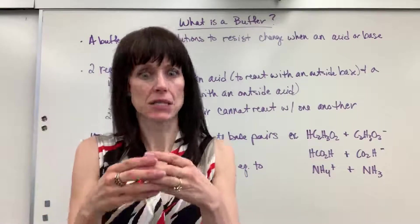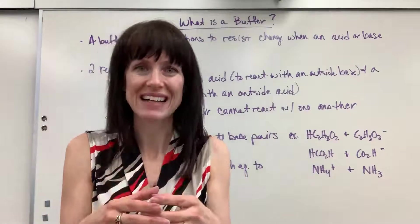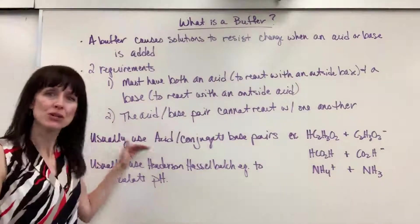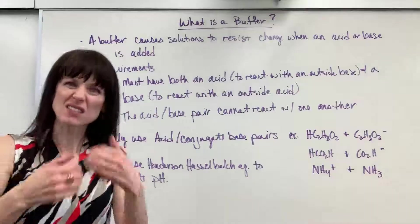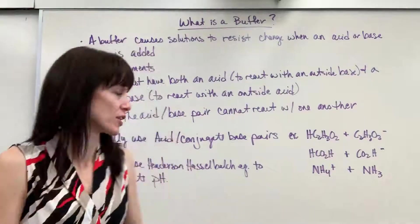How can you have an acid and a base together that don't react? It's right here. We usually use an acid and conjugate base pair. It's like cousins, they're not going to react with each other.